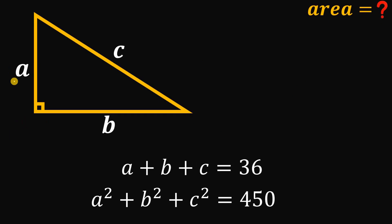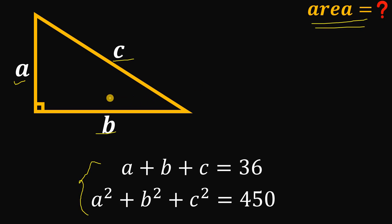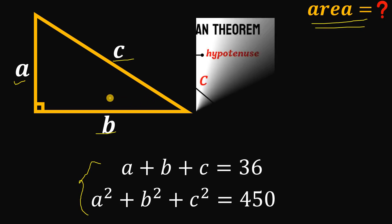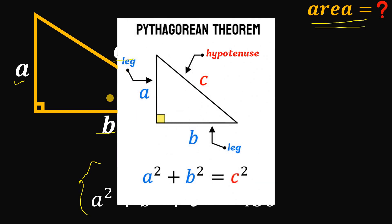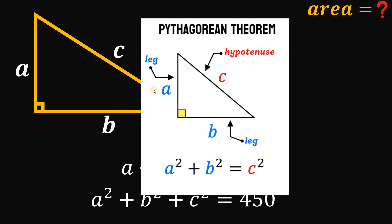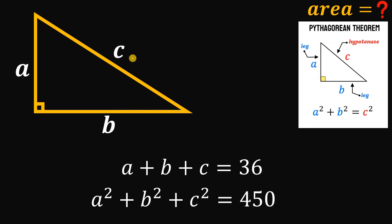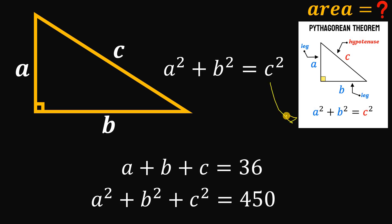So, given this right triangle with side lengths A, B, and C, and given these two equations, our goal is to find the area of this right triangle. Since it is a right triangle, we will use the Pythagorean theorem. Using the Pythagorean theorem, the relationship between A, B, and C is simply A squared plus B squared equals C squared.